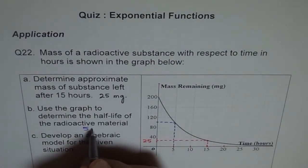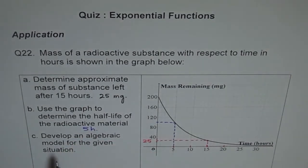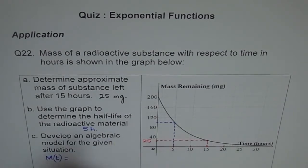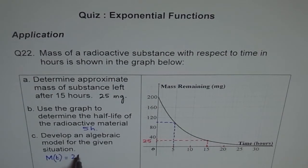Now we need to develop an algebraic model for this. So algebraic model: let's say mass remaining after time t. It is a function of time. The original mass is 200. So we say 200 is our original mass.